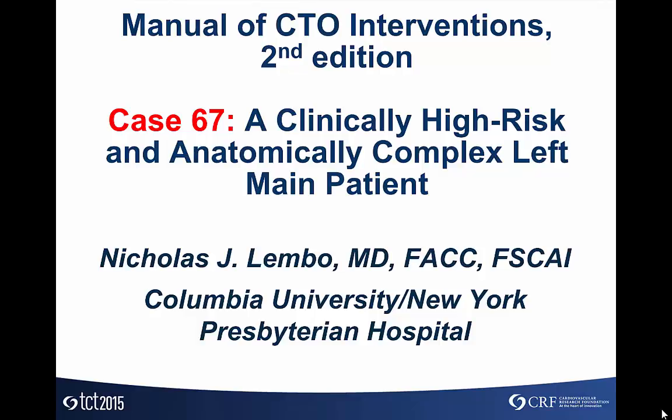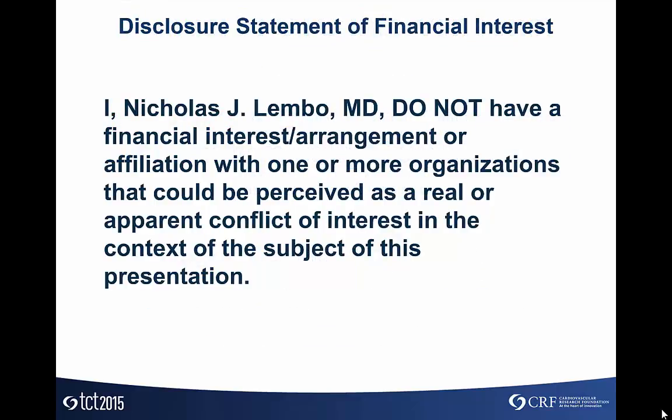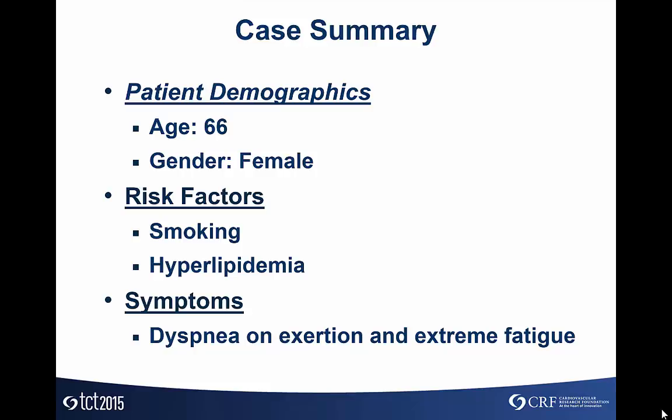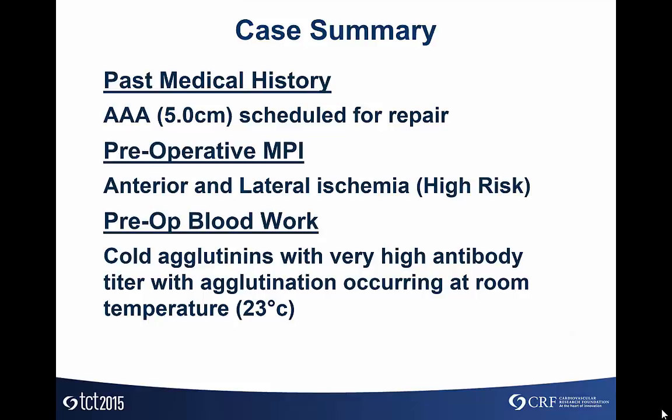This is a clinically high-risk and anatomically complex left main patient. No disclosures. The patient is a 66-year-old female, past history of smoking and hyperlipidemia, with significant dyspnea on exertion and extreme fatigue. She was an avid tennis player, but for the last number of years has been unable to play tennis because of her severe fatigue, such that she had an extensive pulmonary workup that was normal. Recently, she was found to have a 5-centimeter abdominal aortic aneurysm and was scheduled for repair. In her pre-op workup, she was found to have cold agglutinins with a very high titer, with agglutination occurring at room temperature of 23 degrees.